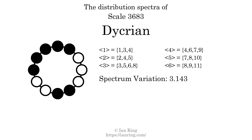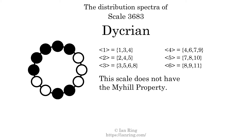The spectrum variation is the sum of all the widths divided by the number of tones. The spectrum variation of this scale is 3.143. Since the variation is greater than 0, this indicates that the scale is not perfectly even. The highest spectrum width is 5. Since this is greater than 1, we know that this scale is not maximally even. If every spectrum has exactly 2 specific intervals, we call that the Myhill property. This scale does not have the Myhill property.